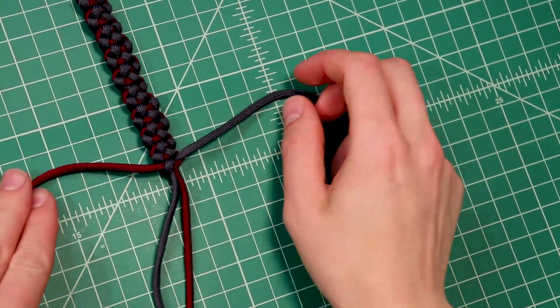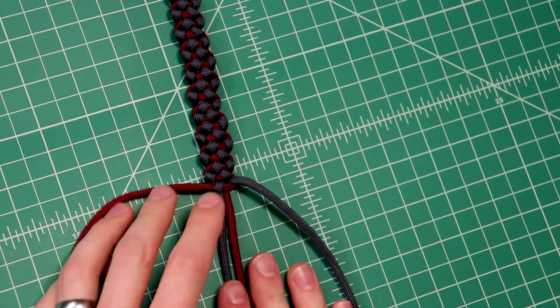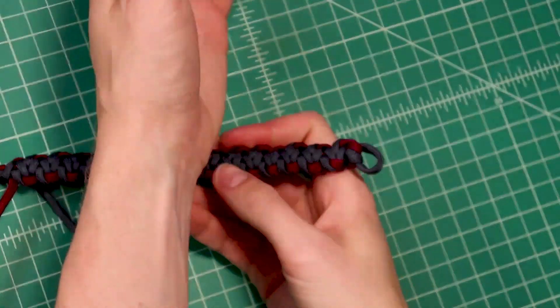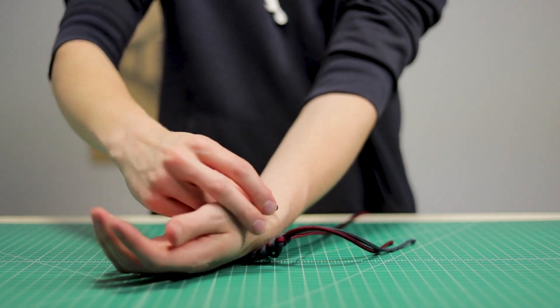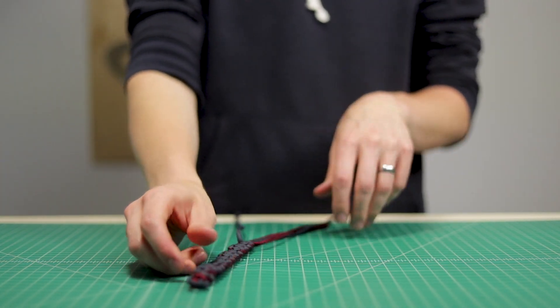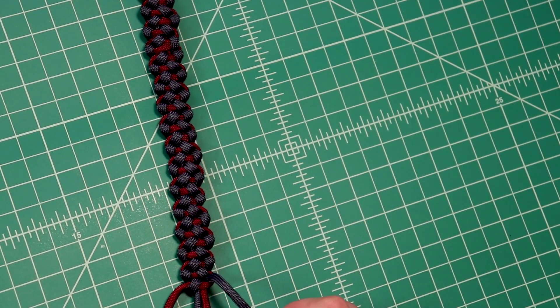All right, so here is the weave. You can stop once it gets long enough to wrap around your wrist and basically touch that loop that you first started with. Just a couple notes on the weave itself.